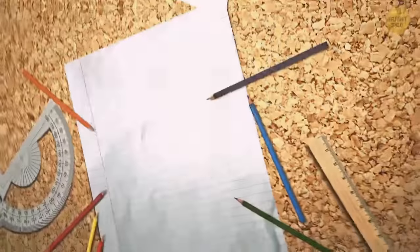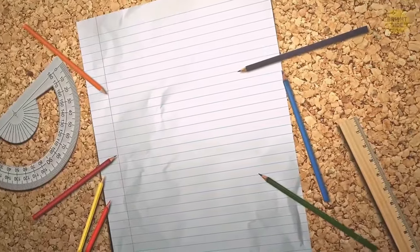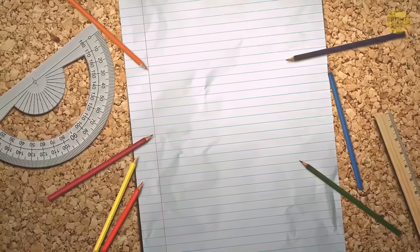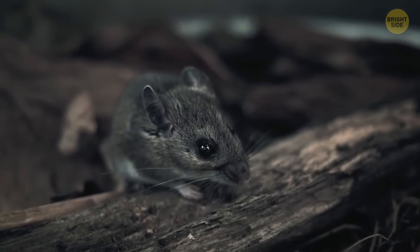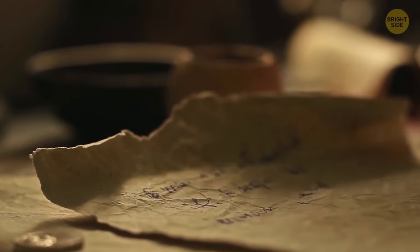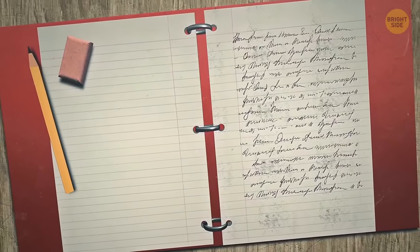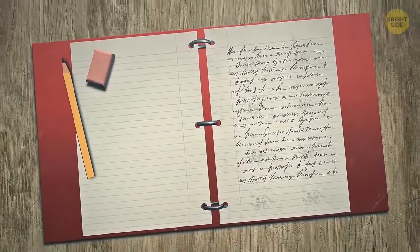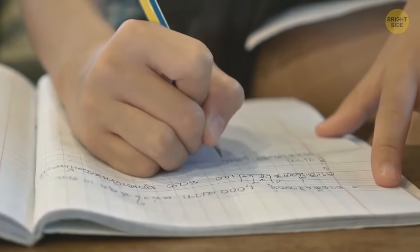Margins on paper aren't for writing in dates and numbering lists. They were originally added to serve a protective function. Back in the day, rats used to be a pesky problem in people's homes and paper was one of their favorite snacks. Margins were added as a safeguard so that the rats would nibble on blank paper rather than taking a bite out of your important work.